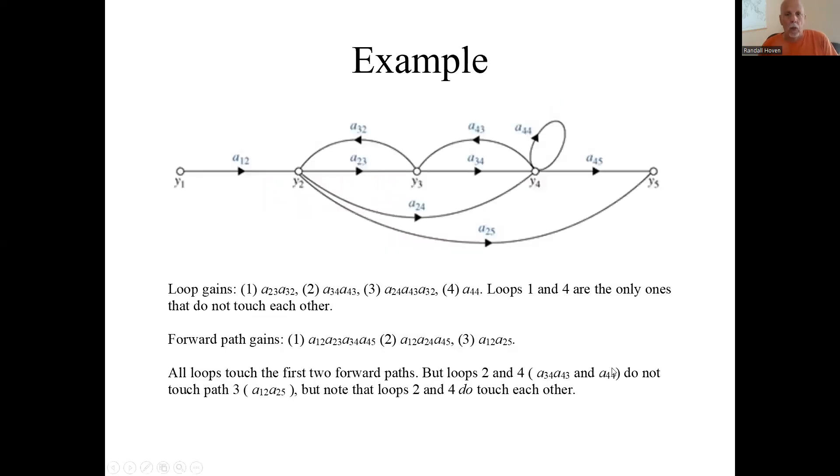Let's do an example. Here we've shown this before. We showed what the loops are. There's four loops. Here's one, here's one, here's one, this little one here. Then here is this one from Y2 to A24 up to Y4, back to Y3, back to Y2. That's a loop. Every node in there it only touched once. So there was four loops.